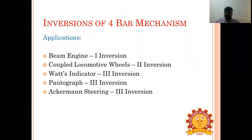In a four-bar mechanism, there are three inversions. The first inversion application is the beam engine, the second inversion application is coupled locomotive wheels, and the third inversion application is Watt's indicator. The beam engine converts rotary motion into reciprocating motion.